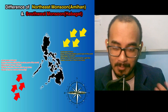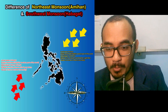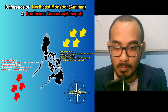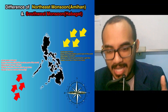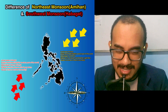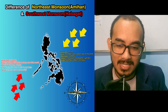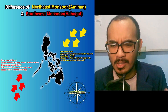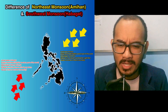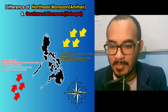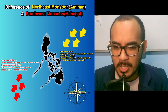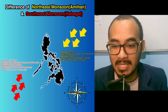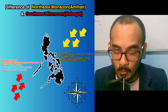Number two: Amihan, or the Northeast Monsoon. The season typically occurs from November to March. Wind direction is from the Northeast, slightly East. Characteristics: brings cooler and drier air associated with more moderate weather and less rainfall. It leads to cooler temperatures, especially in the northern parts of the Philippines, and influences the dry season in the Philippines.